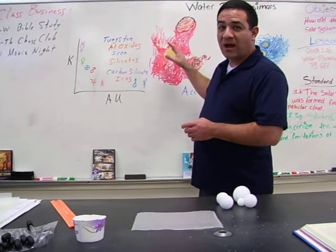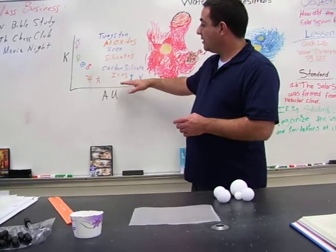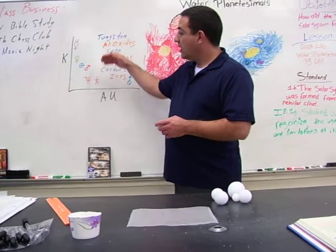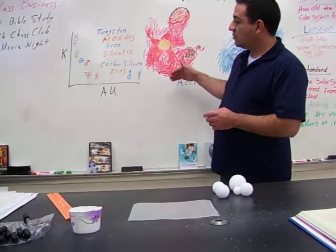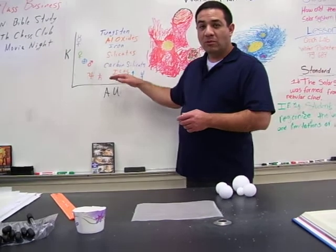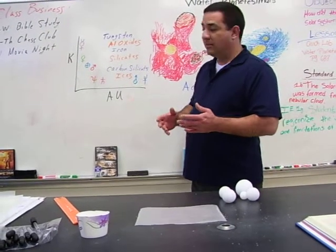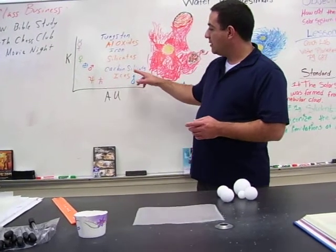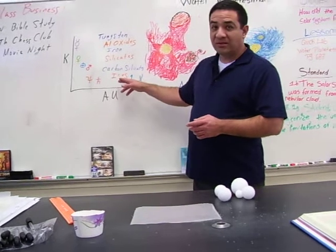It was too close to the sun, too hot to be able to form anything other than metals and silicates. Farther away from the sun, in the outer solar system, you had the gas giants, where it was a frigid environment that allowed carbon silicates and ices to form.